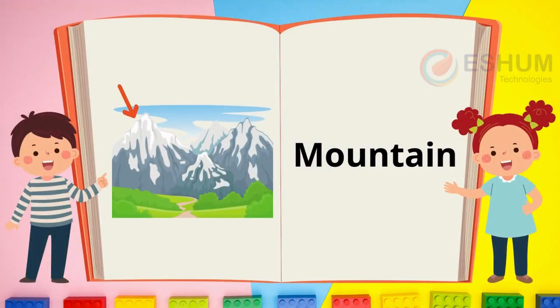Mountain. Mountains look like a triangle. What color do you see on top of the mountain?